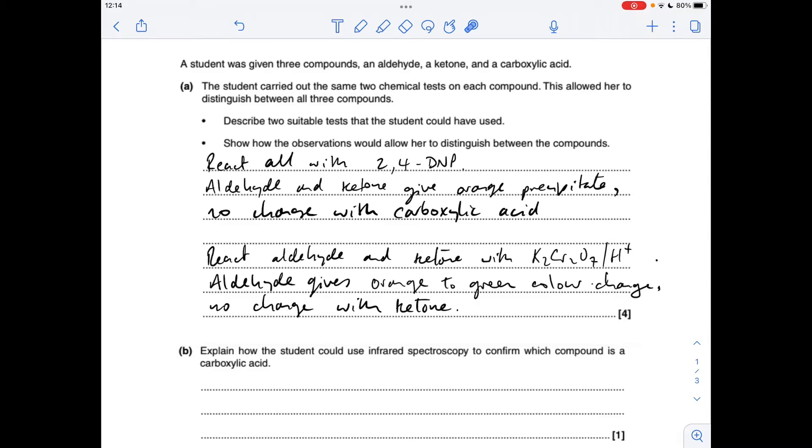Alternatively, you could react the aldehyde and ketone with Tollens reagent. Again, only the aldehyde reacts and it'll give a silver mirror. So either of those two methods for the second test would be fine.